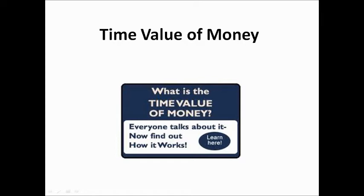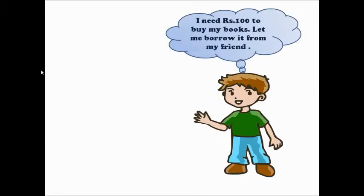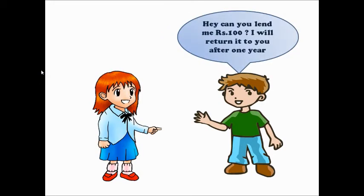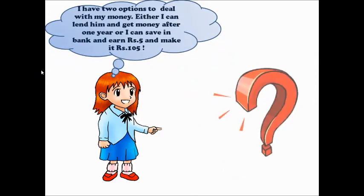Now let's understand this concept with the help of an example. Let me introduce to you Ron. Ron is a school going student. He needs 100 rupees to buy his books, but he doesn't have it. So he decides to borrow it from one of his friends, Alicia. Alicia is a good friend of Ron. Ron asks Alicia if she would lend him 100 rupees and he would return it back to her after a year. Alicia is a good friend of Ron so she decides to help him. But she is confused because she has two options to invest her money — either give 100 rupees to Ron, who would return the very same 100 rupees after a year, or she can put her money in the bank.